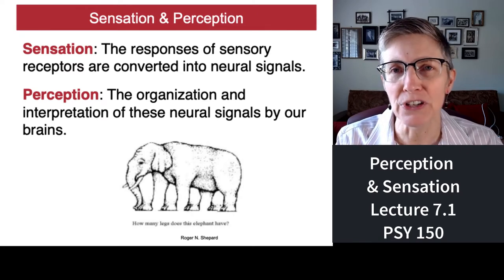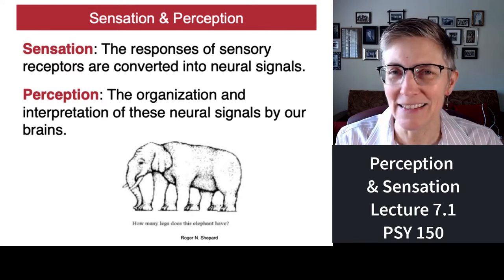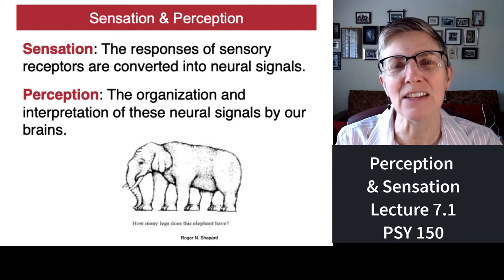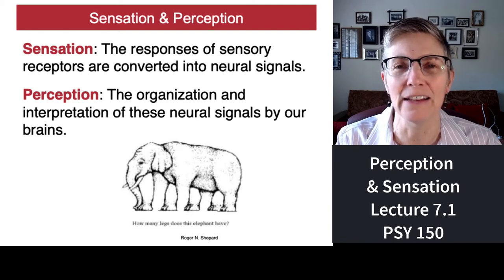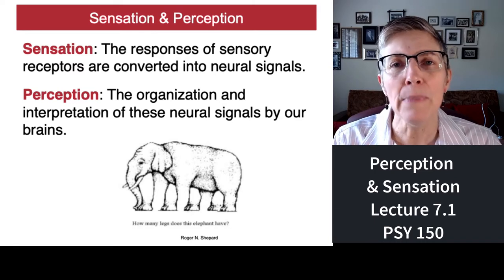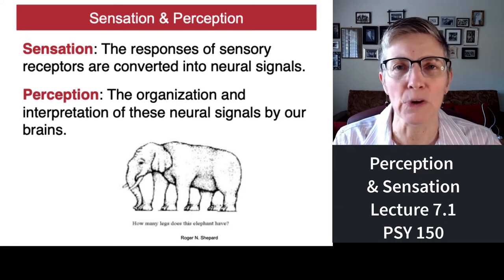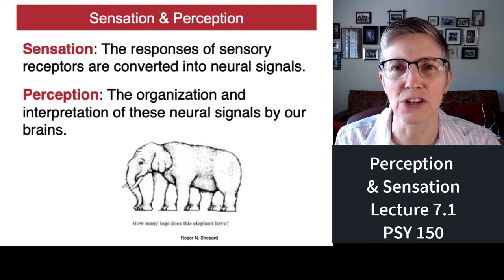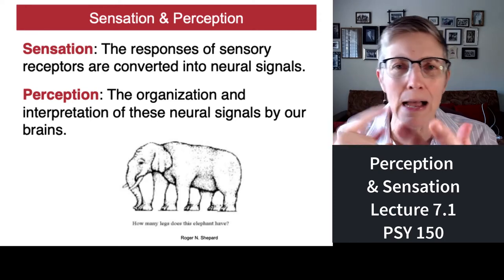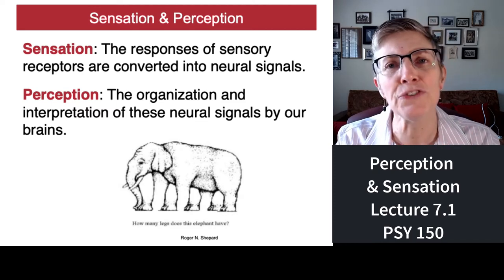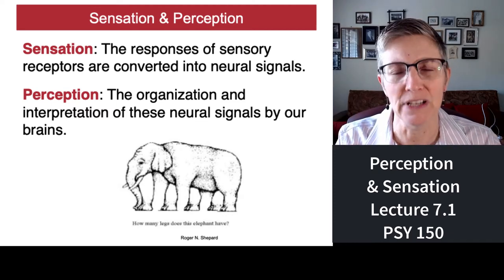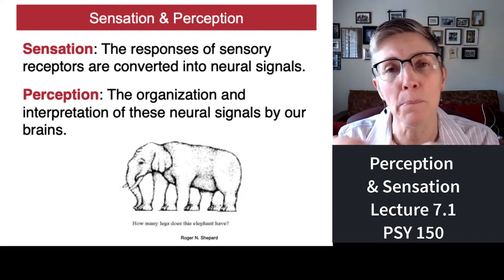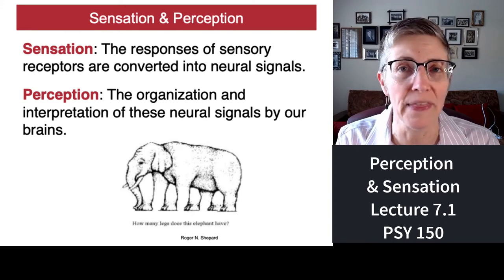Perception is the next stage — it's when you make sense of that information that's coming in. Imagine a camera that takes a picture. The taking of the picture is sensation, but looking at the picture and saying 'oh, that's Uncle Bob and that's Aunt Susie' — that's perception. It's making sense of it, figuring out what parts of the image go together and what they mean.